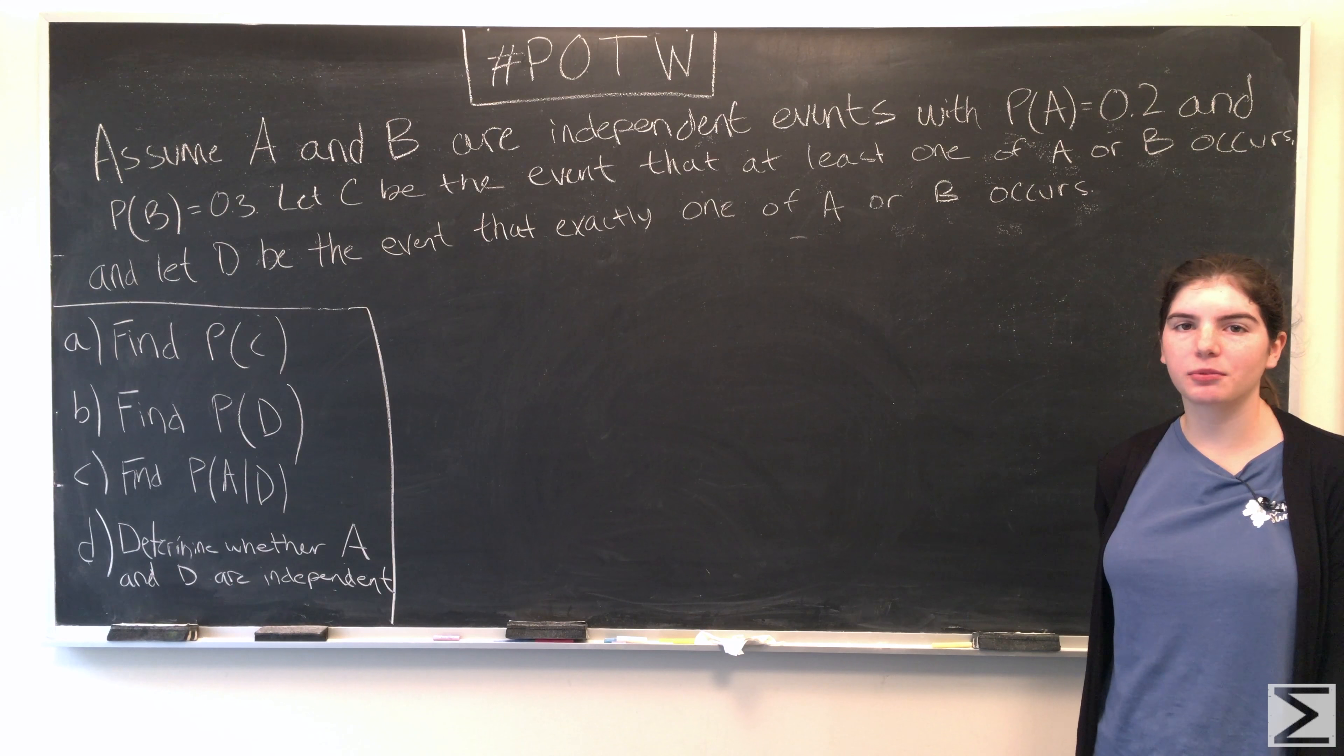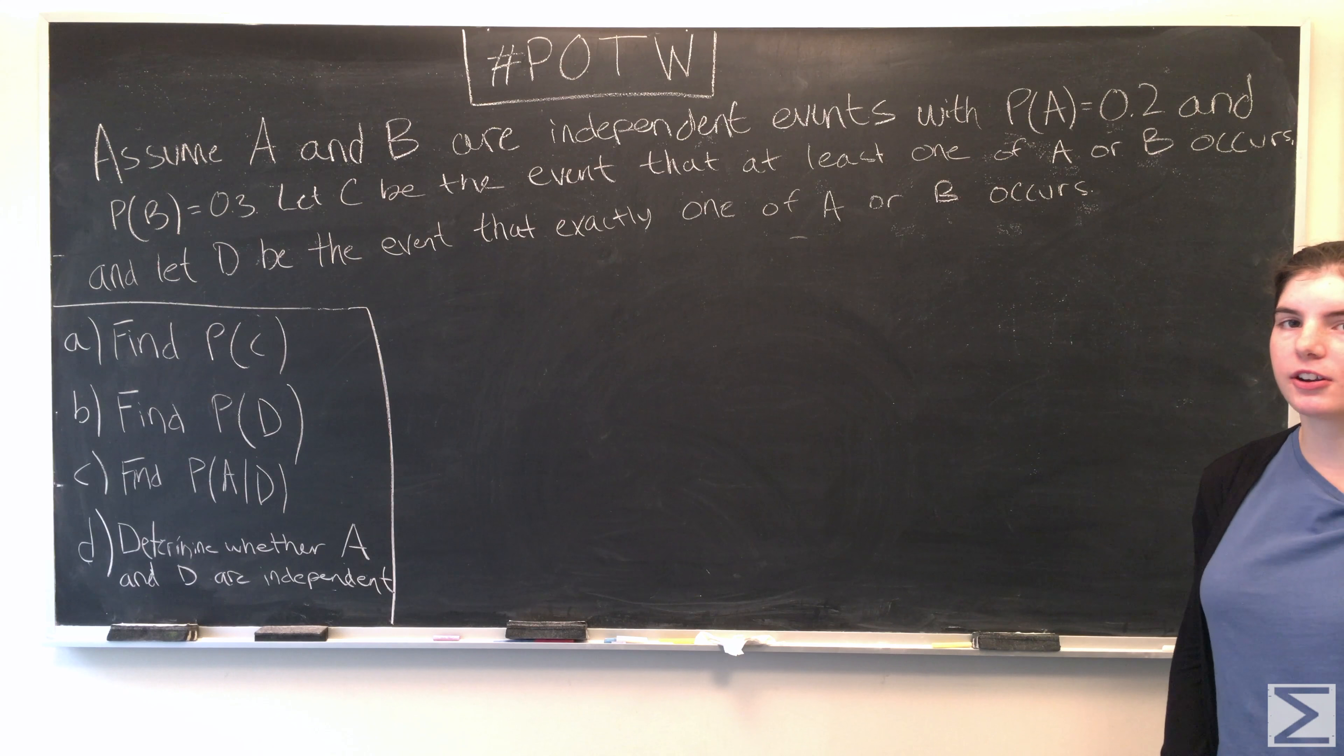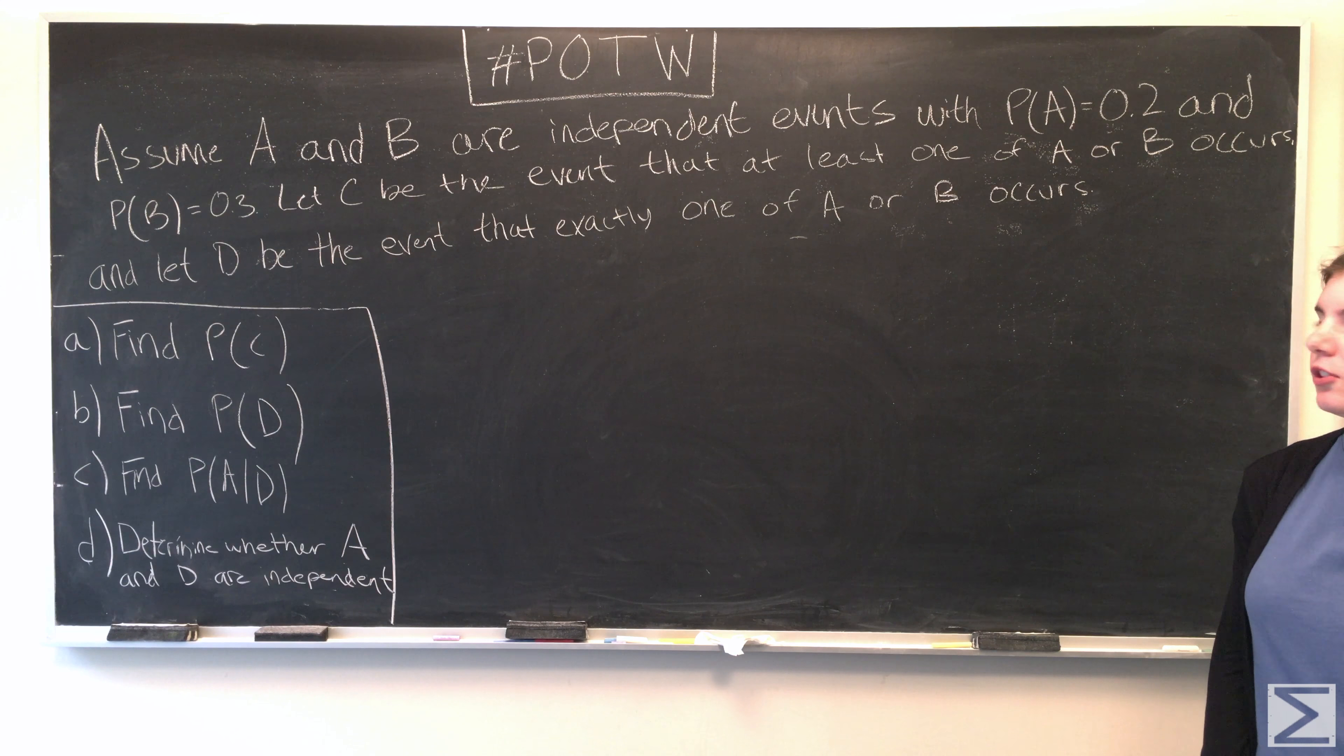Hi, welcome to the Center of Math Problem of the Week. This week our problem is: assume A and B are independent events and the probability of A is equal to 0.2 and the probability of B is equal to 0.3. Let C be the event that at least one of A or B occurs and let D be the event that exactly one of A or B occurs.